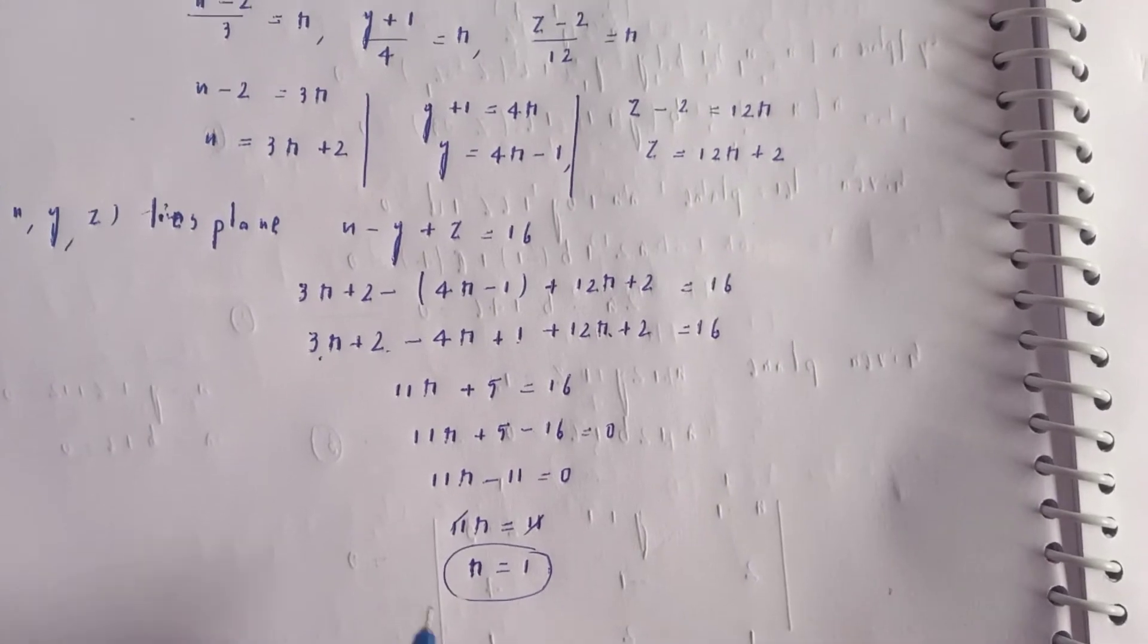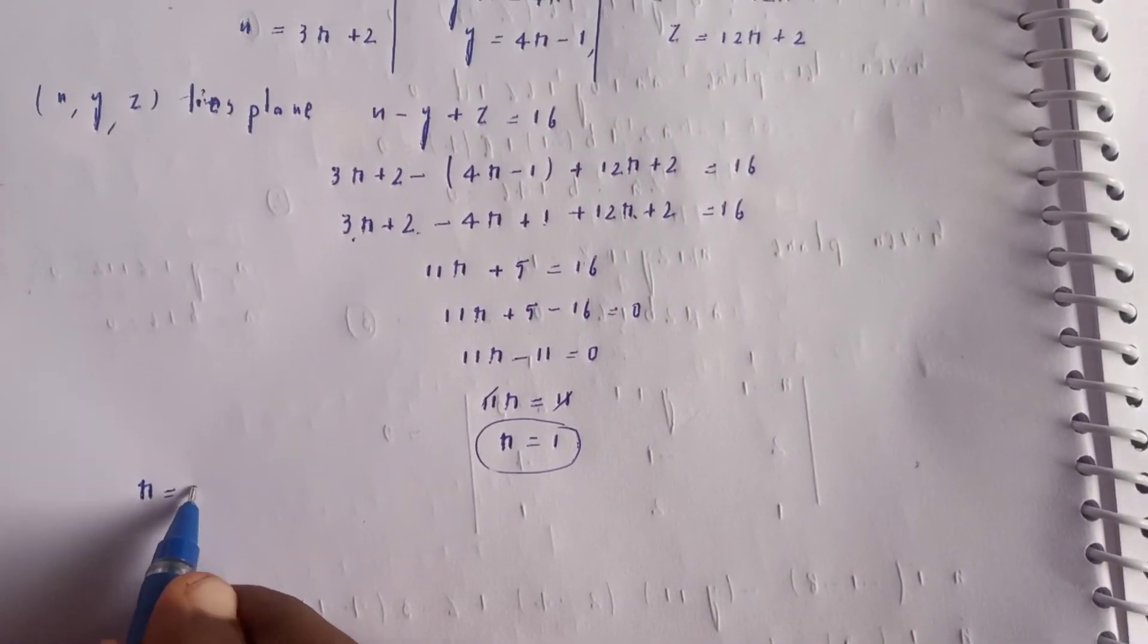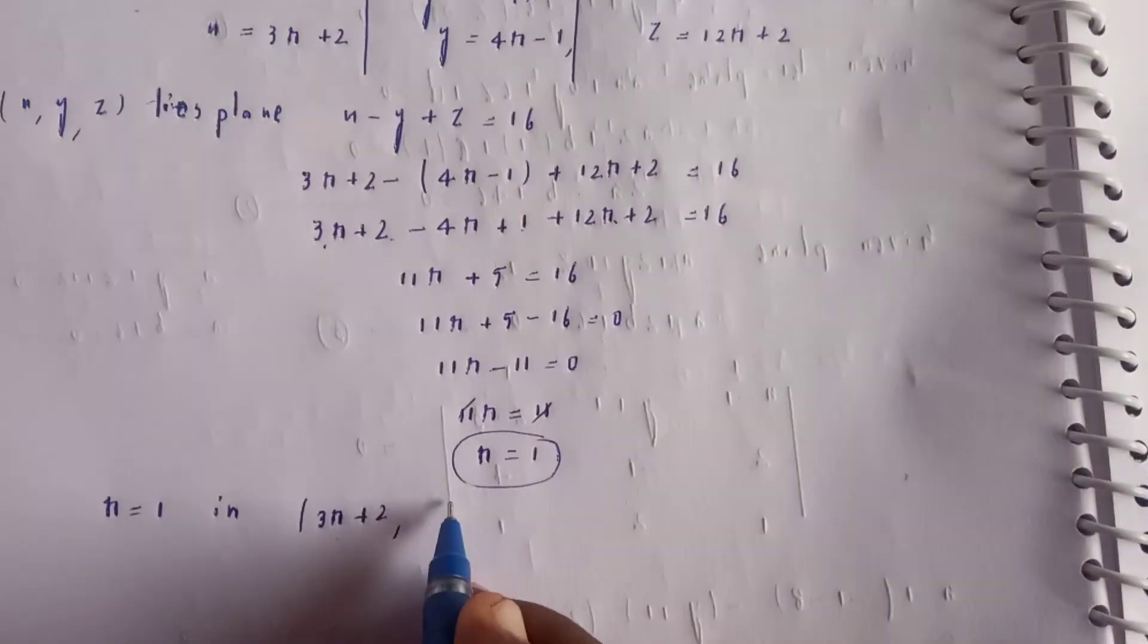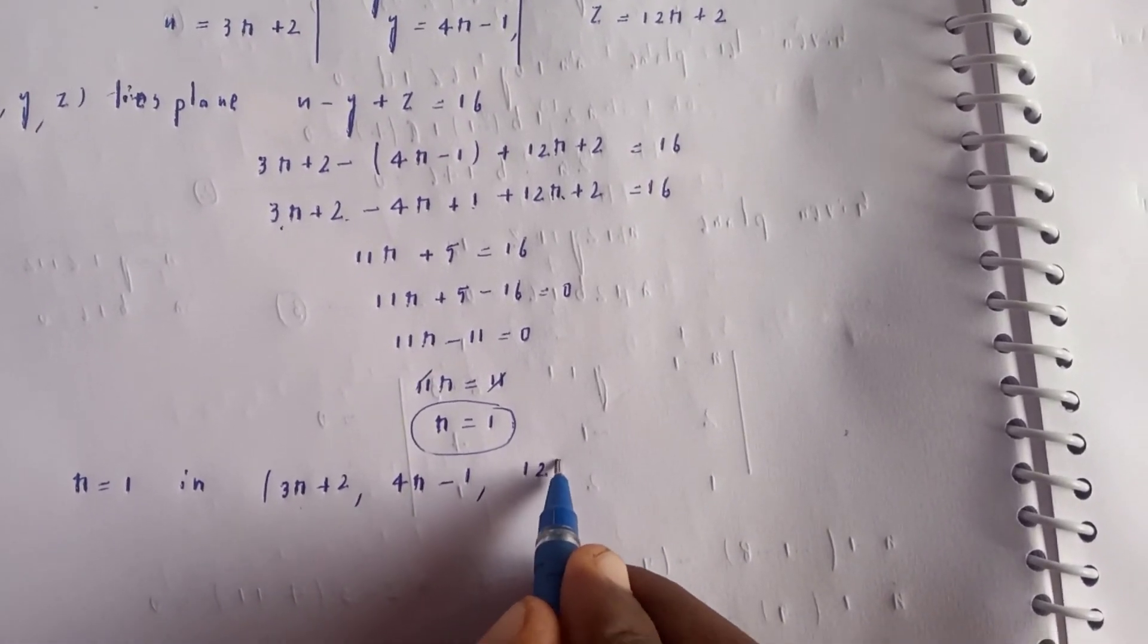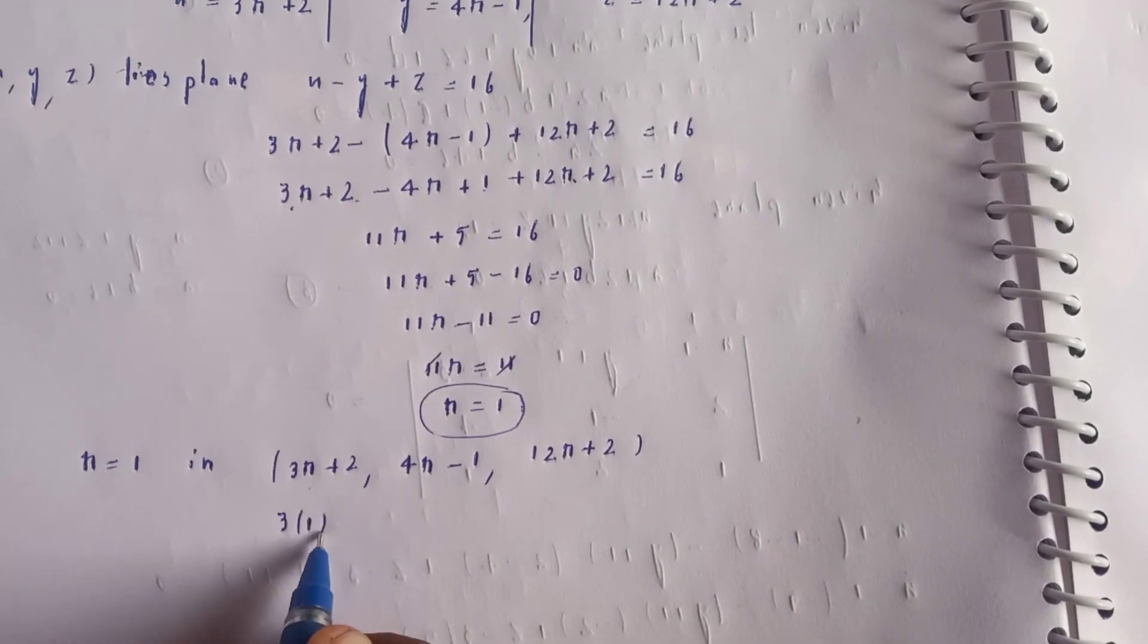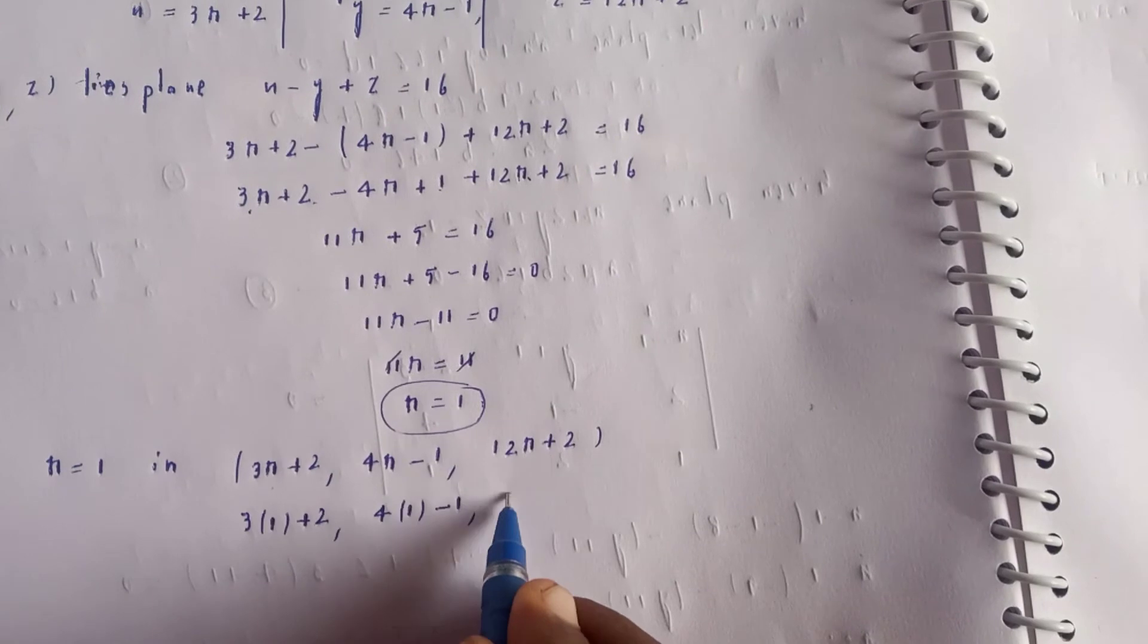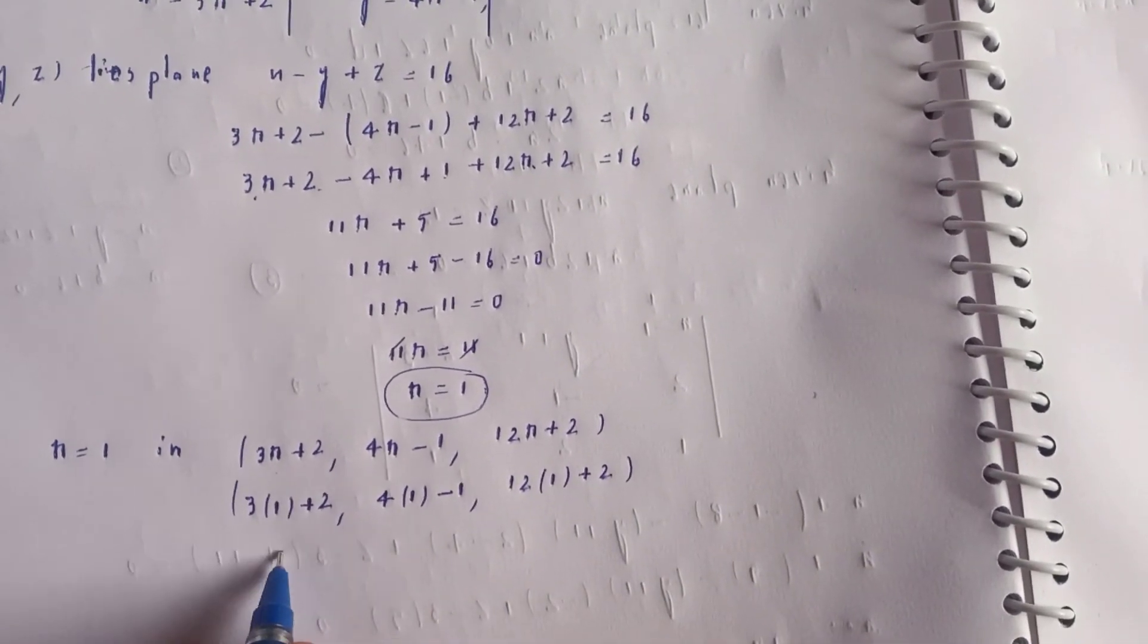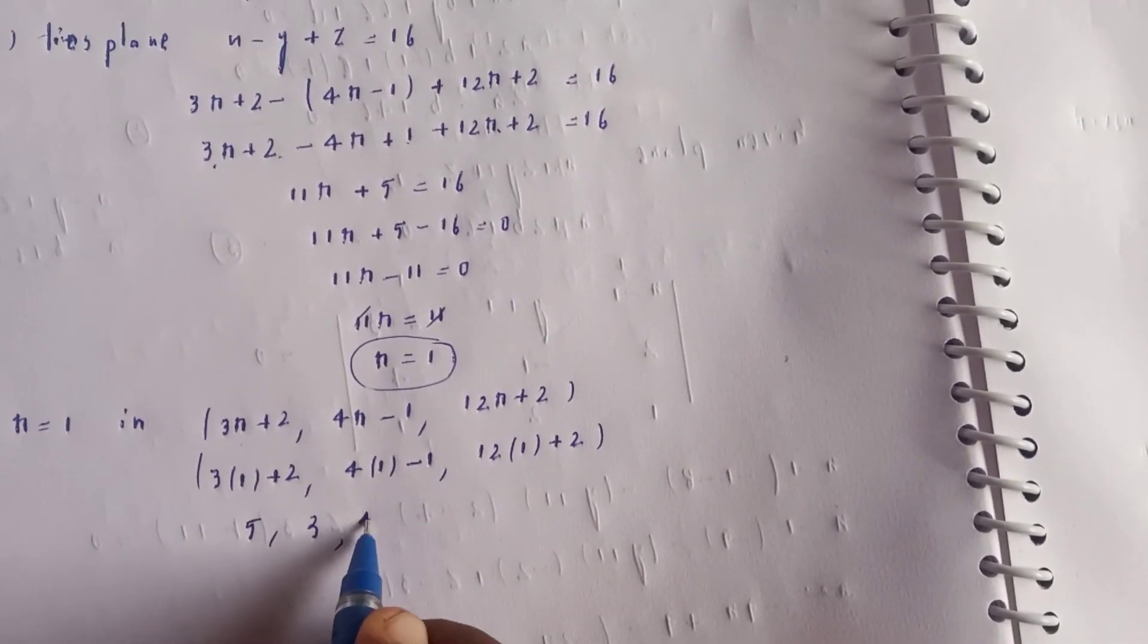Substituting r = 1 into x = 3r+2, y = 4r-1, z = 12r+2 gives x = 3(1)+2 = 5, y = 4(1)-1 = 3, z = 12(1)+2 = 14. So the intersection point is (5, 3, 14).